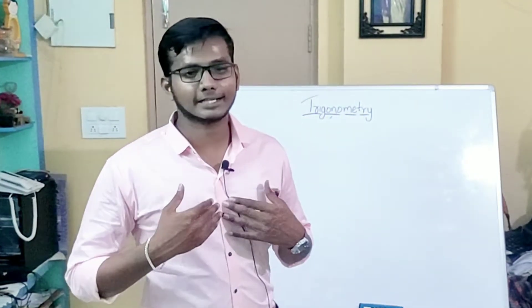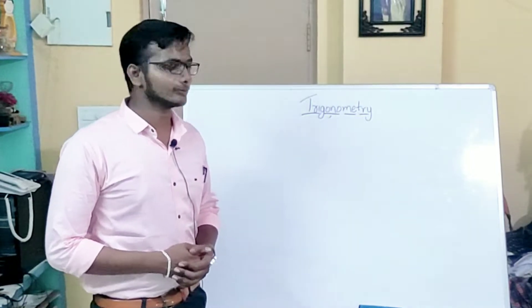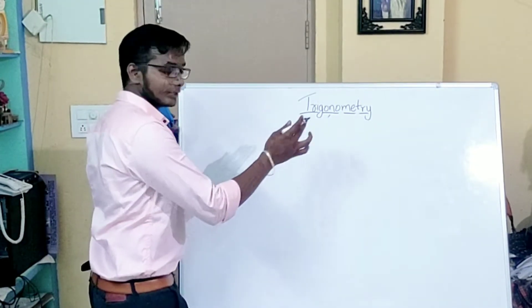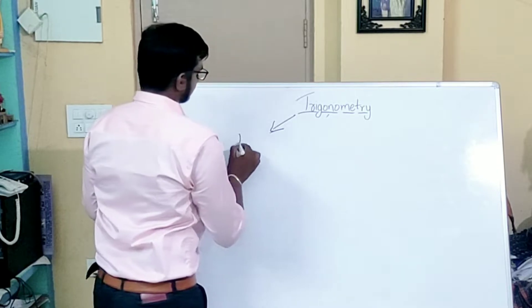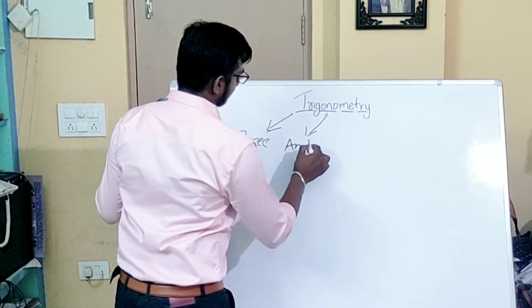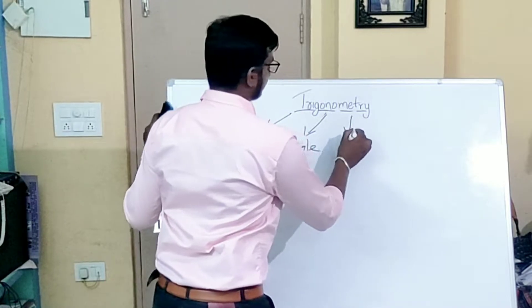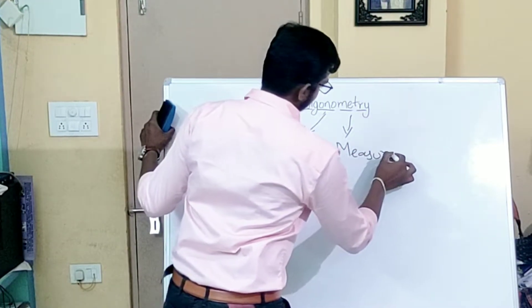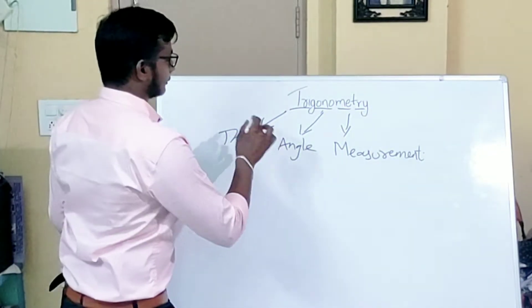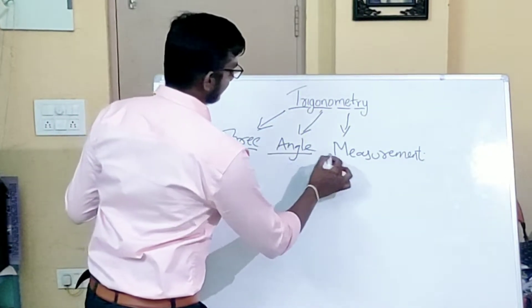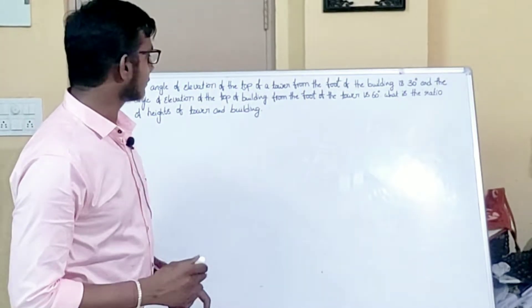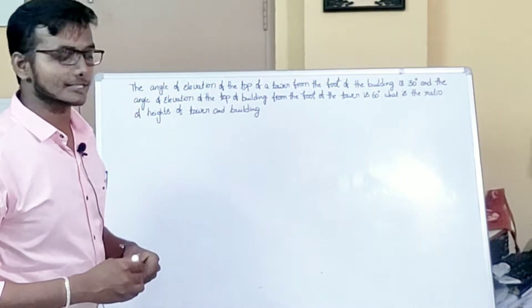Good evening guys, I am Vijay Kumar, here to introduce you to the word trigonometry. The word trigonometry means: 'tri' means three, 'gono' means angle, and 'metric' means measurement. So trigonometry simply means three-angle measurement — it's as simple as that.